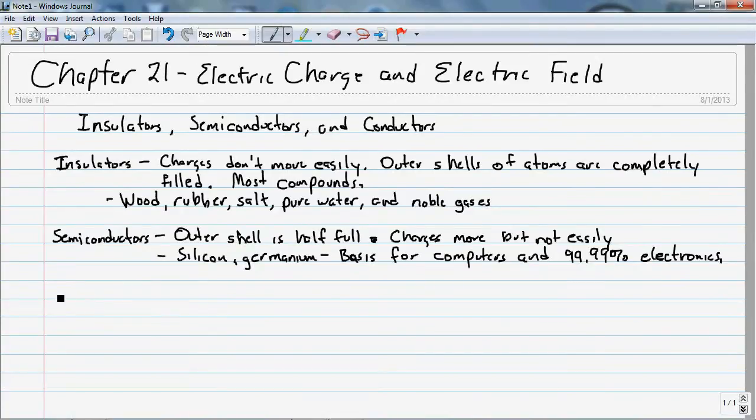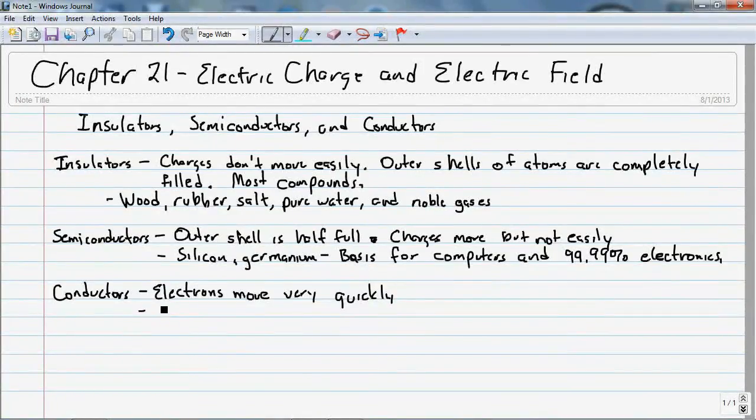Then you have conductors. And the electrons move very quickly. And usually, because the outer shell has maybe one or two electrons. And most metals fall into this category.